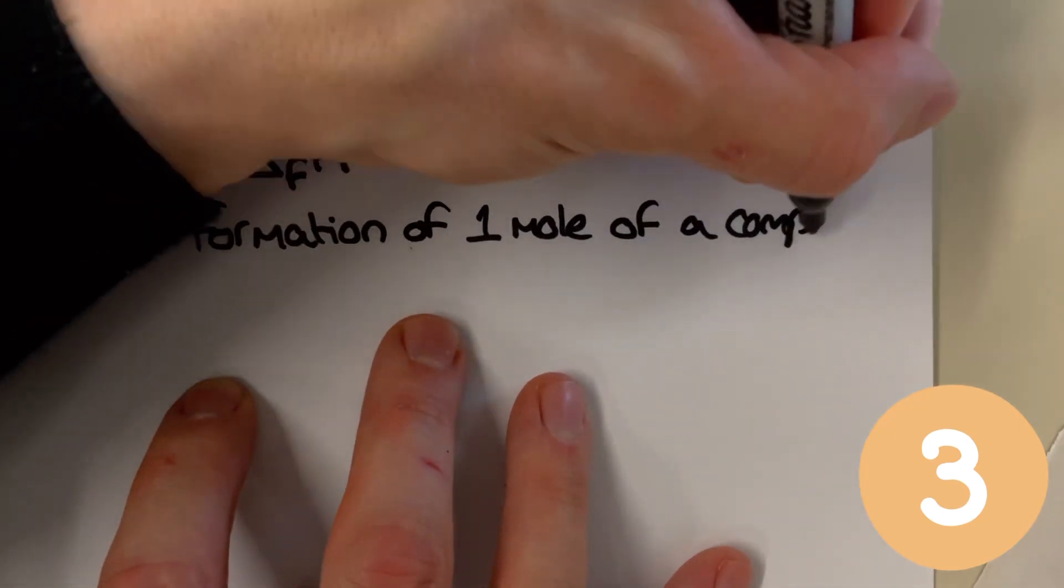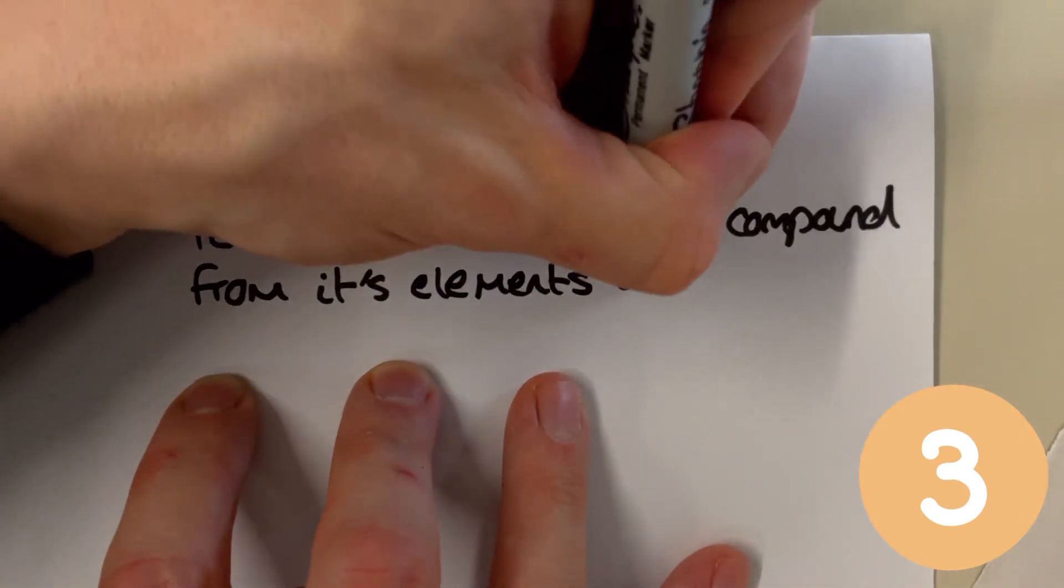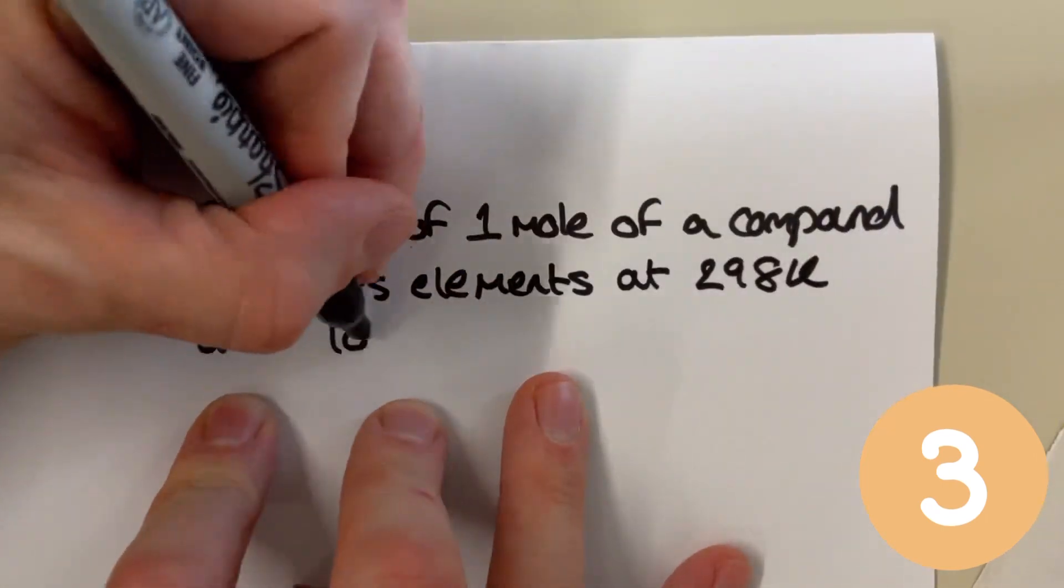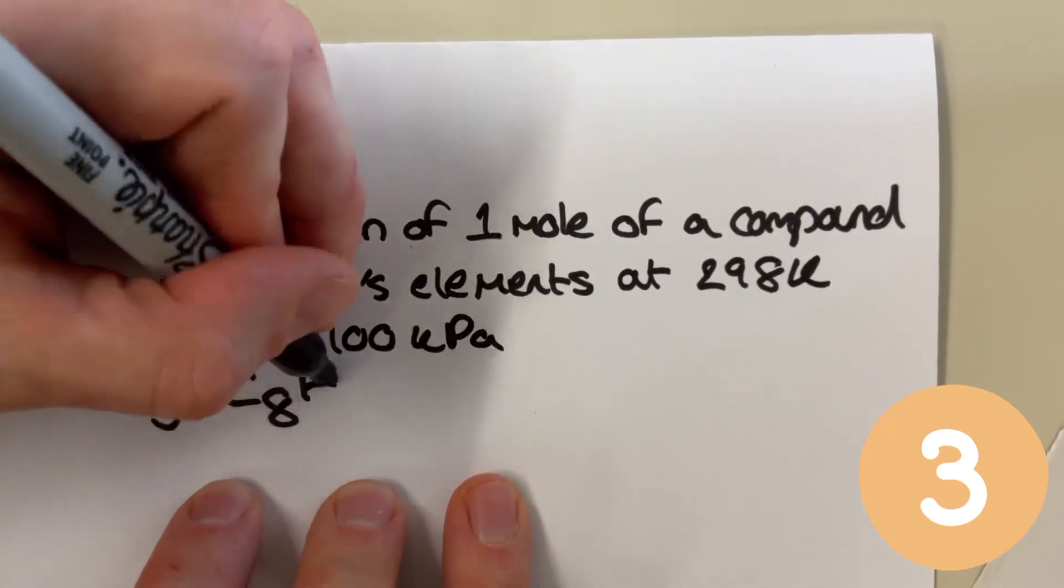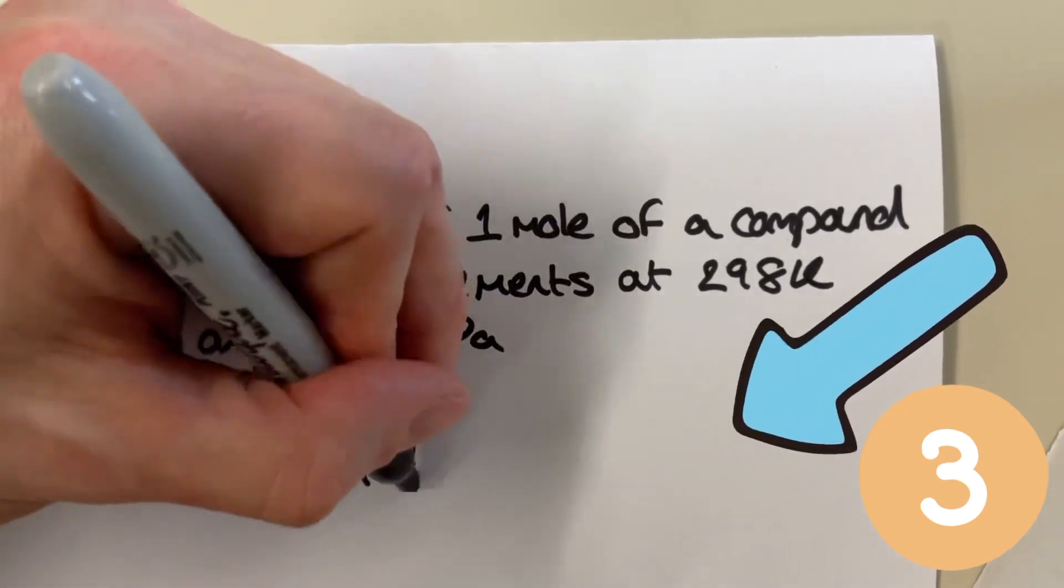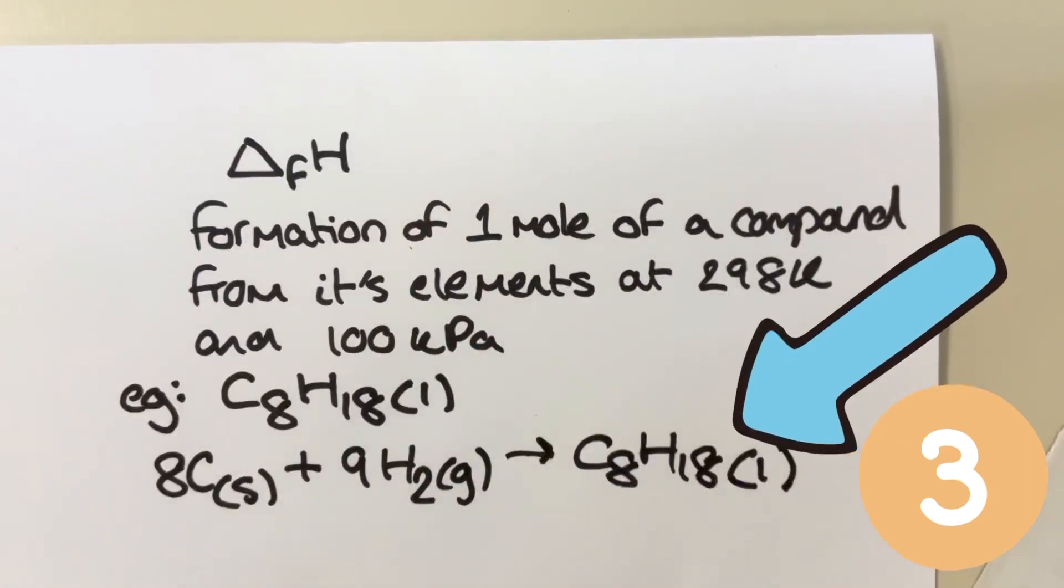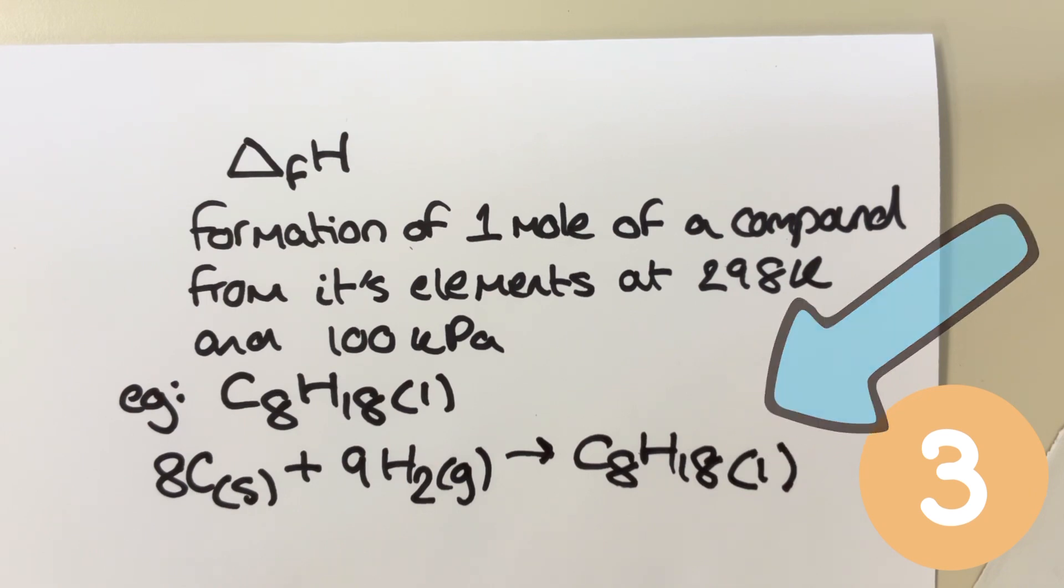Hack number three. Lots of people obsess over definitions on flashcards when they revise and unfortunately they often fall short of being very useful. So to boost their quality, make sure you always add an actual chemical example to every definition you cover or maybe even more. Definitions in exams always come up alongside associated chemistry so why shouldn't your revision of them?